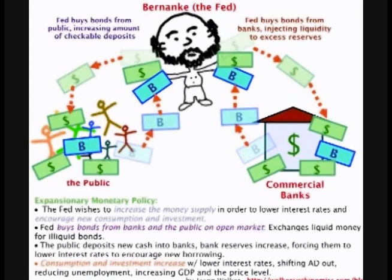If the Fed wants to raise interest rates, it sells government securities to the open market. When the Fed collects the money for these securities, it decreases bank reserves. This leaves the banks less money to lend out, which tightens up credit. Because there is now less money to lend out, banks will raise their lending rates to lower demand.